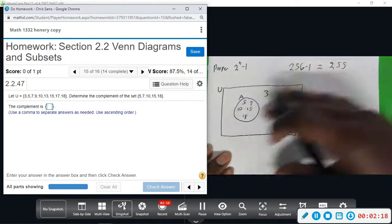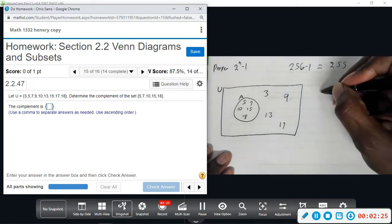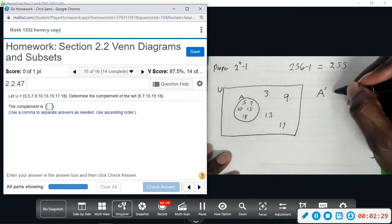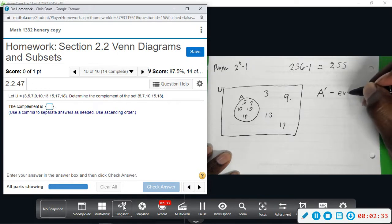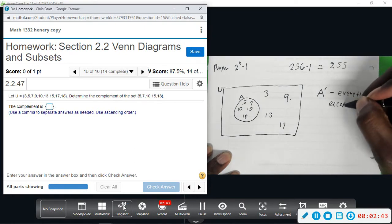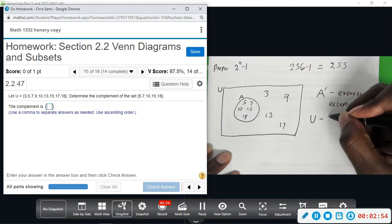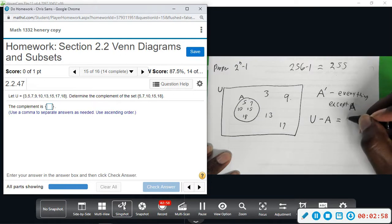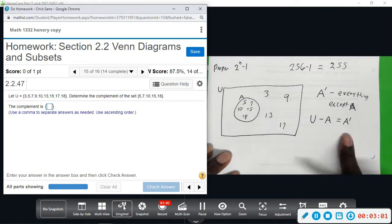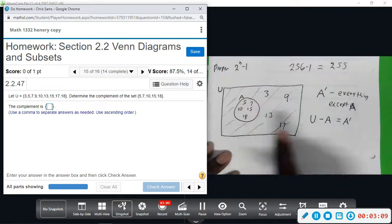The complement is everything that is in the universal set, but not in this set. So everything but—it's normally denoted like this—we'll say the complement of A, so the opposite, everything except A, or you can say the universal set minus A, minus the things that are in A will give you A complement. So A complement, or the complement, is going to be just the stuff that's on the outside, so I'm shading the box, but I'm shading everything except for the circle A.